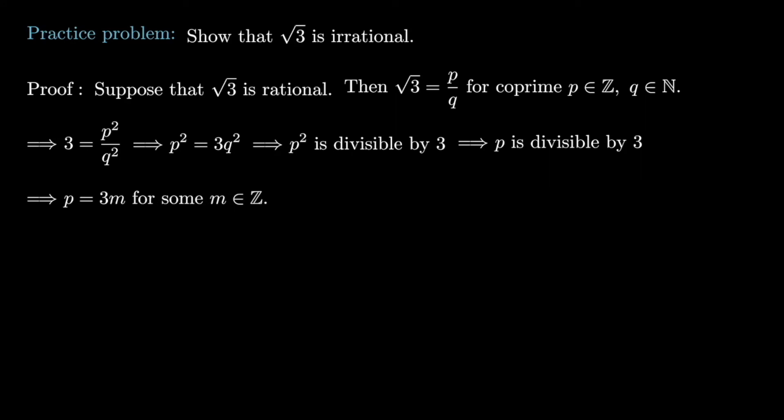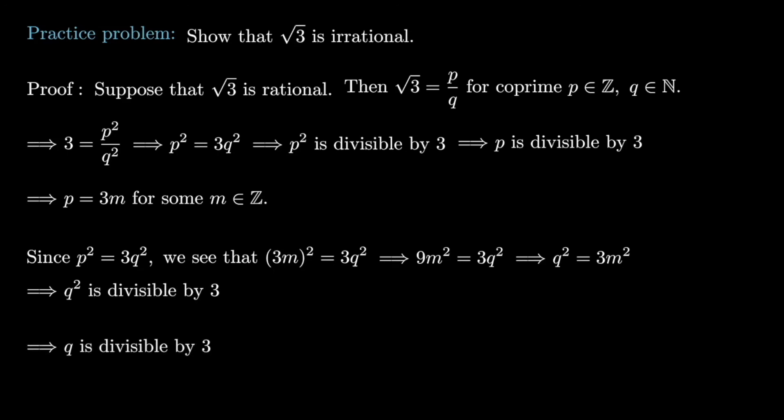Now, since p squared is equal to 3q squared, we can insert our expression for p, and we find that 3m squared is 3q squared, but that means that 9m squared is 3q squared, so q squared has to be 3m squared. In particular, q squared is divisible by 3, but if q squared is divisible by 3, it must be that q is divisible by 3, and q must therefore be equal to 3n for some integer n. Again, in a similar fashion to what we saw before, this violates the assumption that p and q are co-prime, so square root of 3 can't be a rational number.